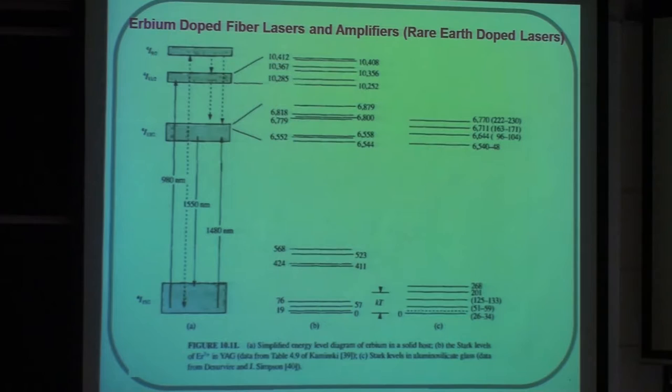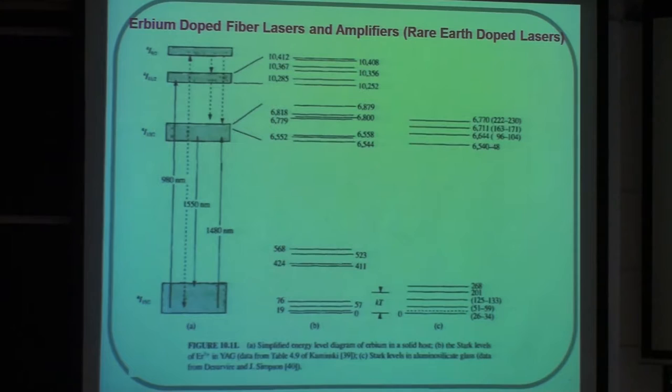There were two wavelengths where the fiber had minimum loss: 1300 nanometers and 1550 nanometers. So now you have an atom with a transition right at 1550 — exactly where you want to communicate. The erbium-doped fiber amplifier works by using a 980 nanometer diode pump laser to take atoms from the ground state all the way to the upper band, from where they come down, make a transition down to the lower lasing level, and then relax back. So it's essentially a three-level system, with the caveat that all of these levels are actually multiple levels clustered together.